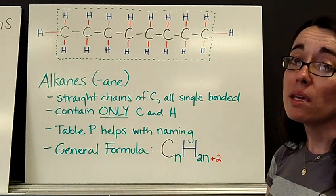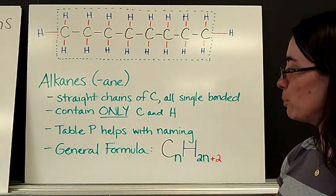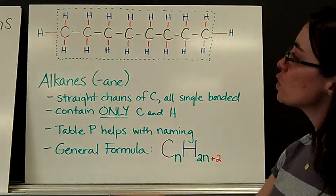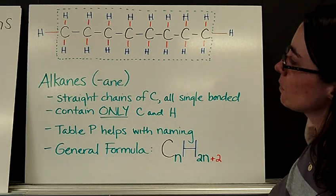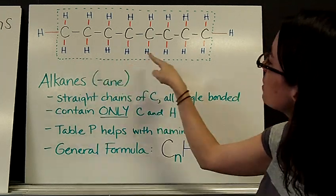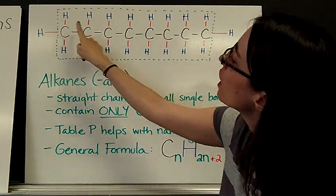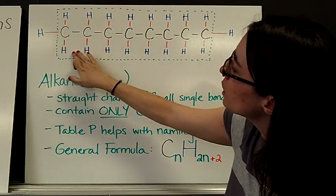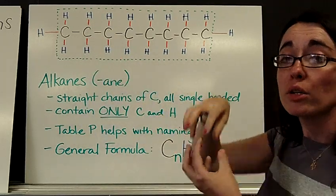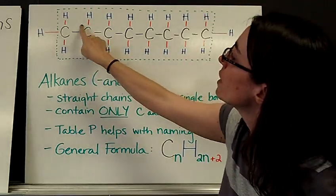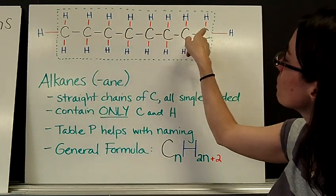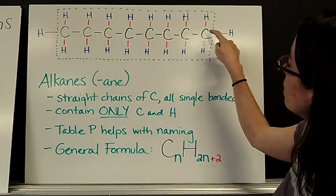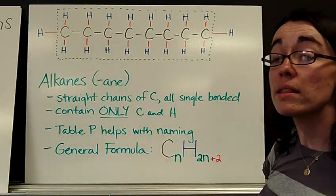As I said, Table P, P for prefixes, is going to help you with the naming. Now I need to show you what the general formula is. So if you take a look up here at this big long thing, you will see inside the dashed box that every carbon has a hydrogen above and a hydrogen below, hydrogen above, hydrogen below. So there are two hydrogens for every carbon that's in it.